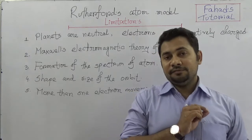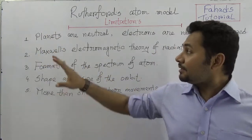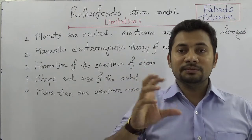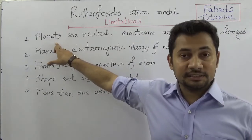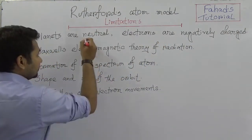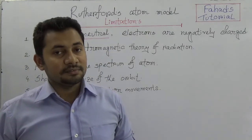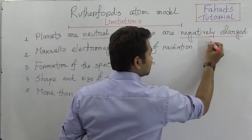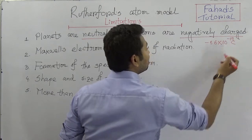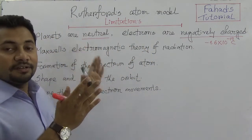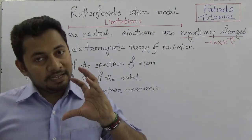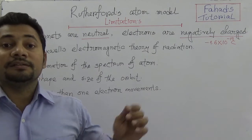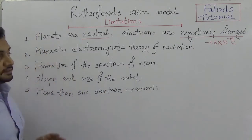The first limitation of Rutherford's model is that, while he compared it to the solar system, the planets of the solar system are neutral — that is the key point. But the electrons of an atom are not neutral; they are negatively charged, with a charge of 1.6 × 10⁻¹⁹ coulombs. So the first limitation is regarding charge: planets are neutral but electrons are negatively charged.